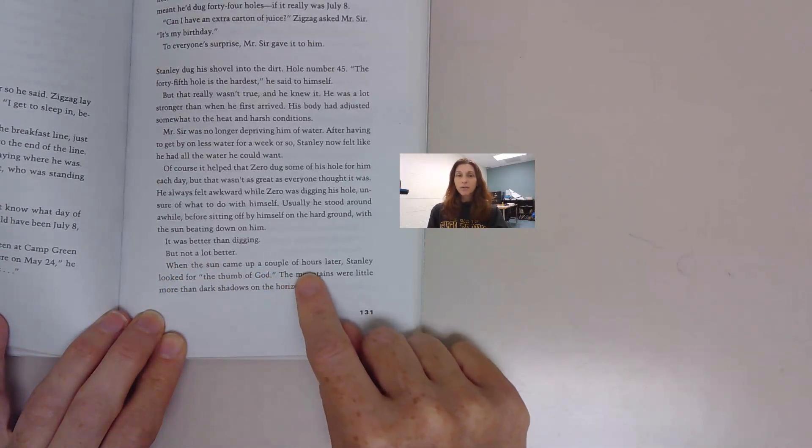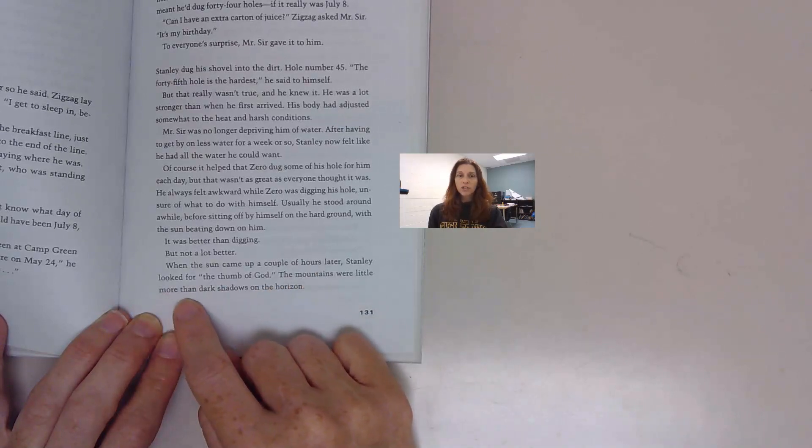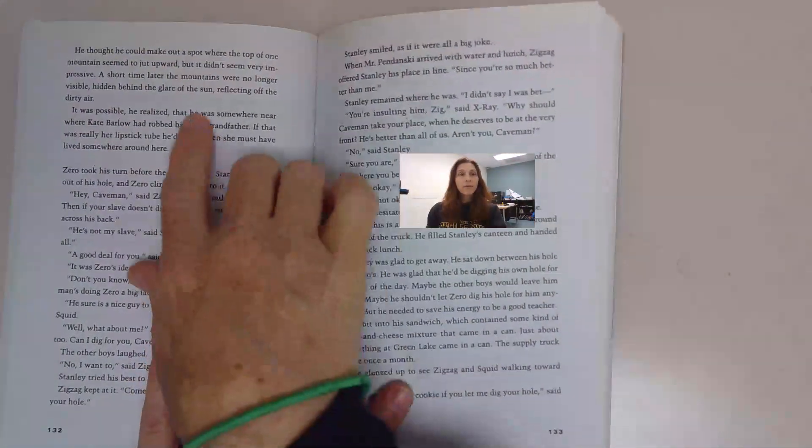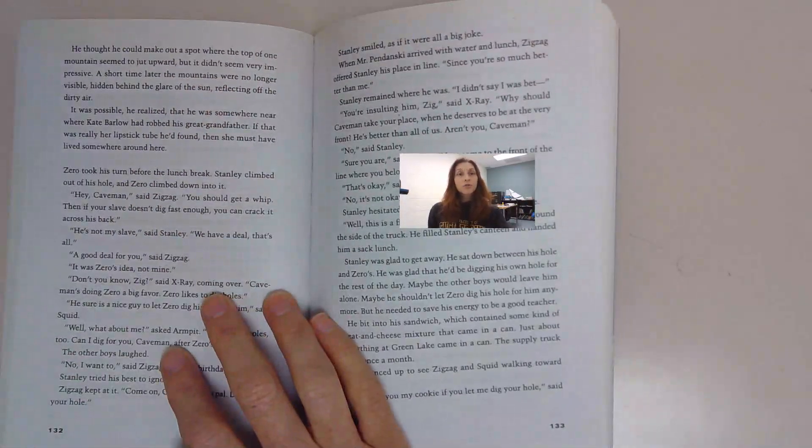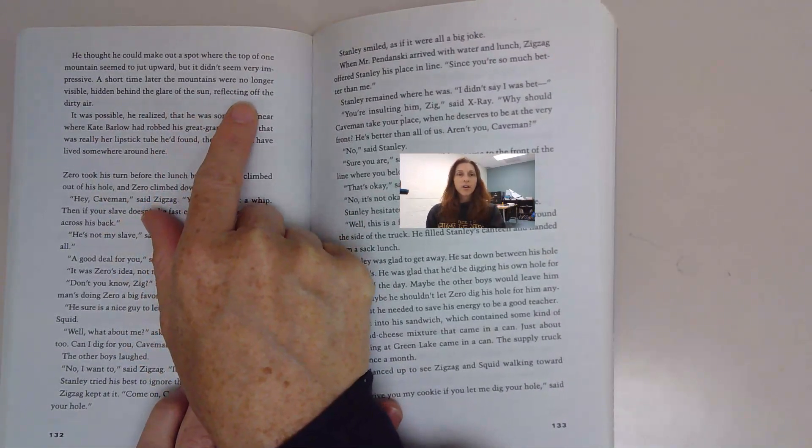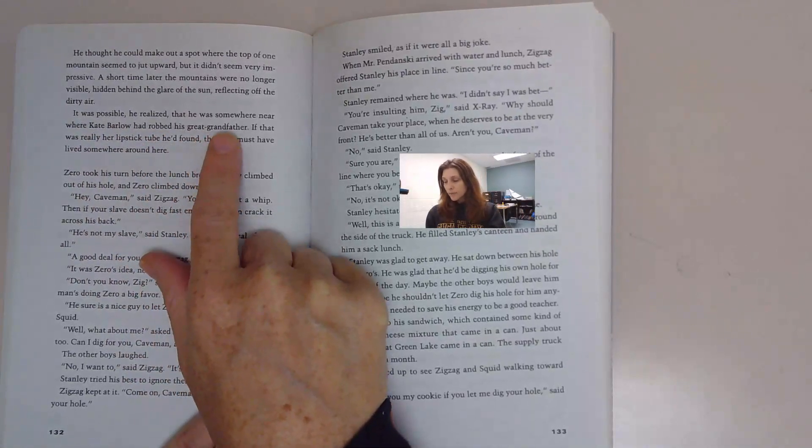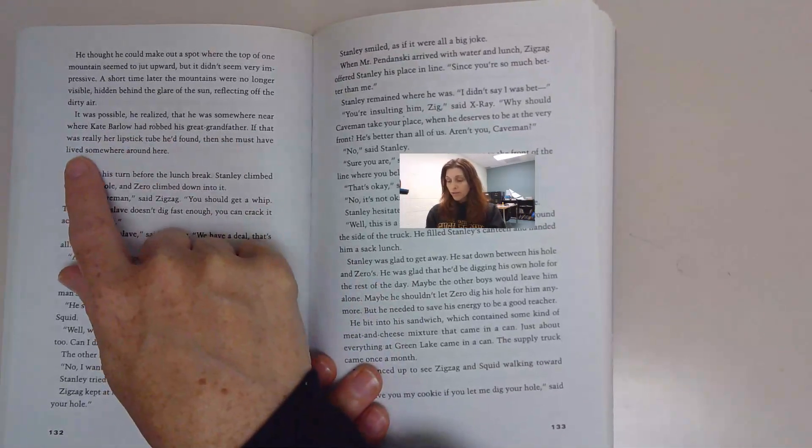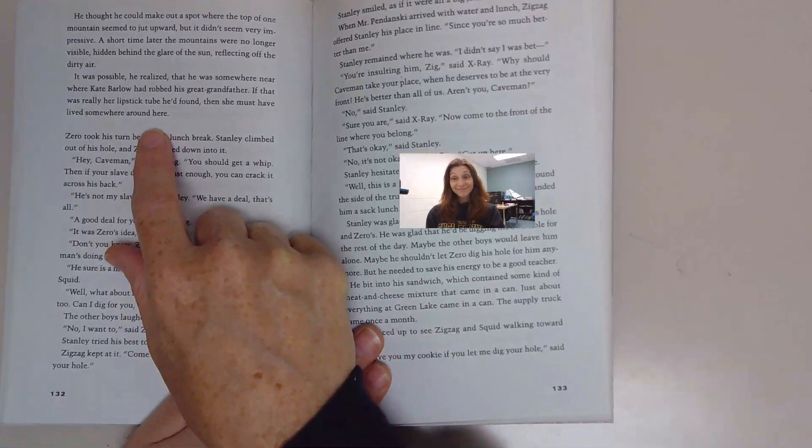When the sun came up a couple hours later, Stanley looked for the thumb of God. The mountains were little more than dark shadows on the horizon. He thought he could make out a spot where the top of one of the mountains seemed to jut upward, but it didn't seem very impressive. It was possible, he realized, that he was somewhere near where Kate Barlow had robbed his great grandfather. And we know she did.